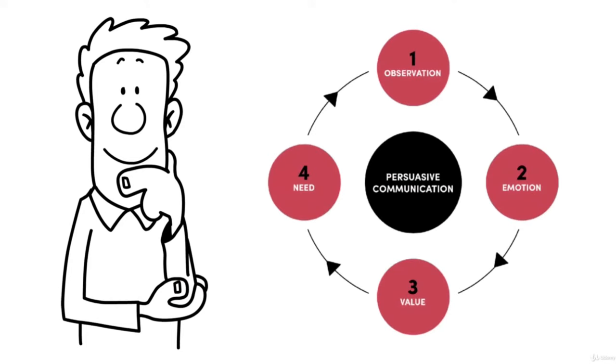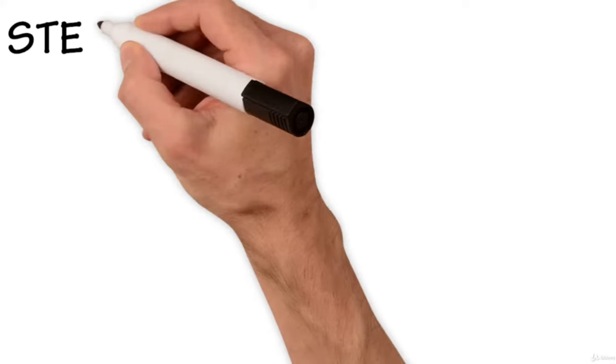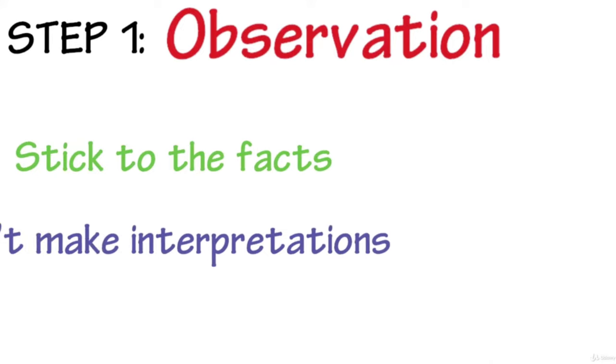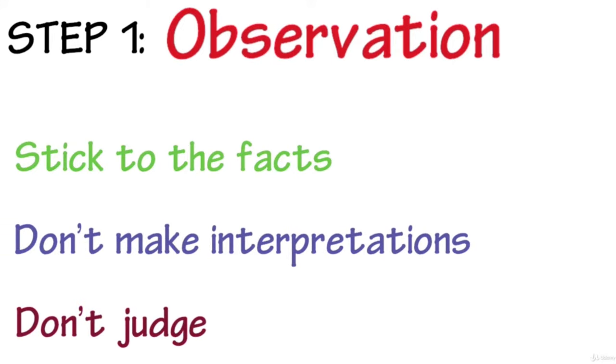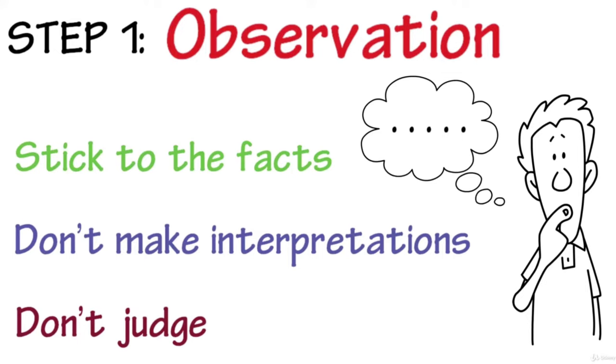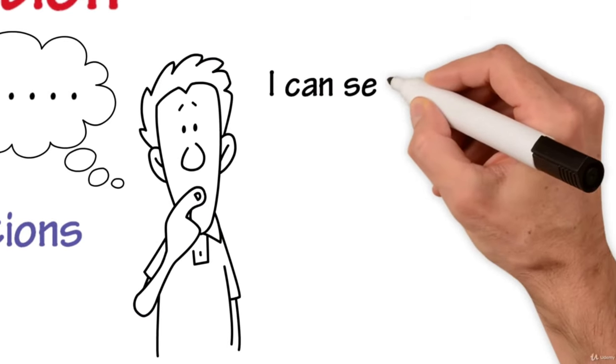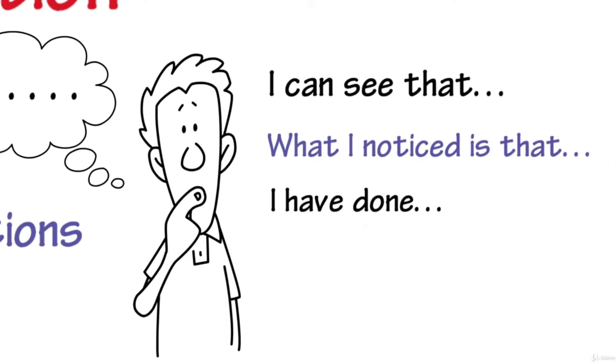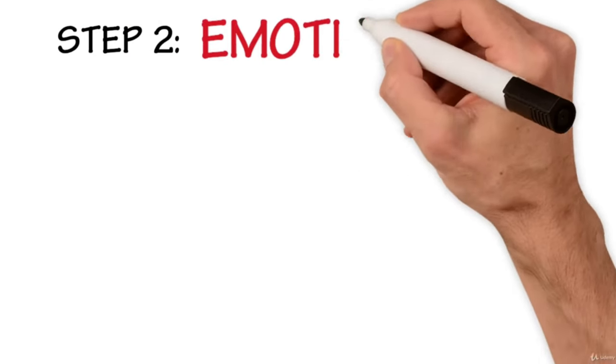The method of nonviolent communication comprises four consecutive steps. The first one is observation. Stick to the facts. Do not interpret. Do not judge. All you do is observe and put in words what you are observing. For instance, I can see that, what I noticed is that, I have done, what I hear is that you and so on and so forth.